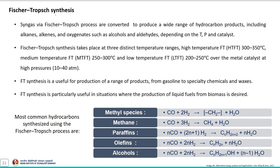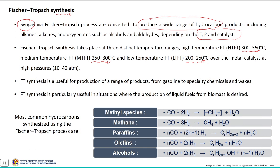Fischer-Tropsch (F-T) synthesis is widely used to convert syngas into a range of hydrocarbon products including alkanes, alkenes, and oxygenates such as alcohols and aldehydes. The conversion and product distribution depend on temperature, pressure, and catalyst. F-T synthesis operates at three temperature ranges: high temperature (300–350°C), medium temperature (250–300°C), and low temperature (200–250°C). Based on the temperature range, different products can be obtained.